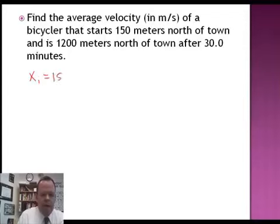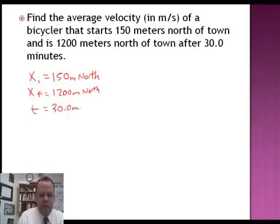So we know our initial position is 150 meters north. Our final position is 1,200 meters north. Our time is 30 minutes. And we're trying to solve for our velocity, our average velocity.